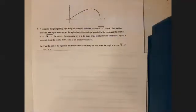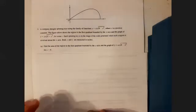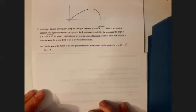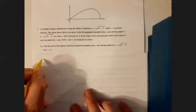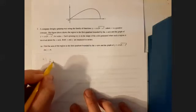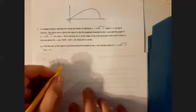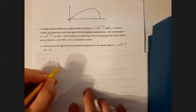Okay guys. So number three, a company designed spinning toys using the family of functions y equals cx square root four minus x squared, where c is a positive constant. Good to know. They also give you the graph there. The figure above shows the region in the first quadrant bounded by the x axis and the graph of y for some c. Each spinning toy is in the shape of a solid generated when such a region is revolved about the x axis. Both x and y are measured in inches.